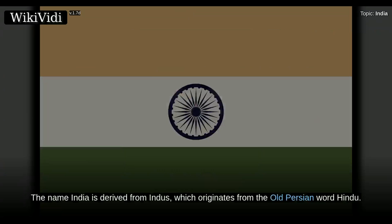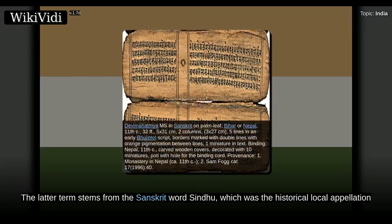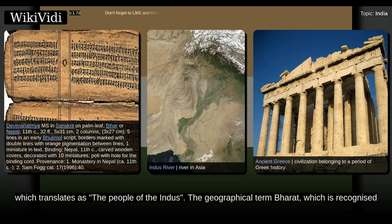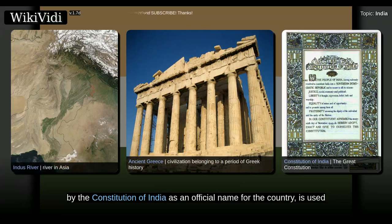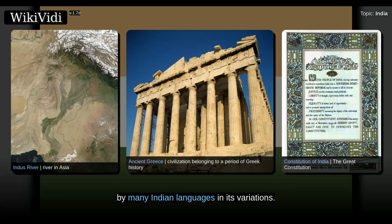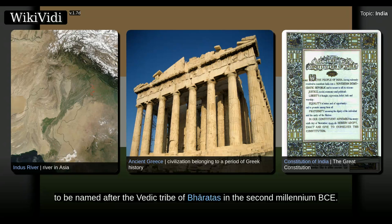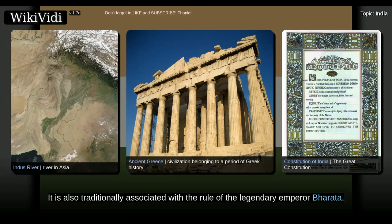The name India is derived from Indus, which originates from the old Persian word Hindu. The latter term stems from the Sanskrit word Sindhu, which was the historical local appellation for the Indus River. The ancient Greeks referred to the Indians as Indoi, which translates as the people of the Indus. The geographical term Bharat, which is recognized by the constitution of India as an official name for the country, is used by many Indian languages in its variations. It is a modernization of the historical name Bharatavarsha, which traditionally referred to the Indian subcontinent. Scholars believe it to be named after the Vedic tribe of Bharatas in the second millennium BCE.